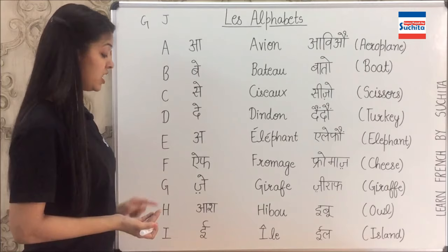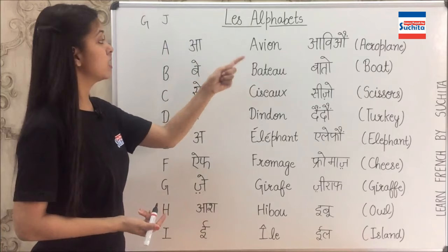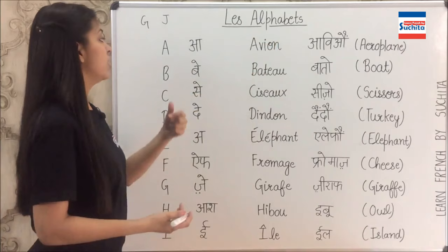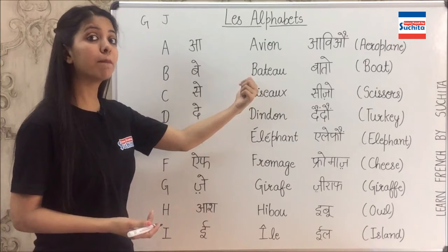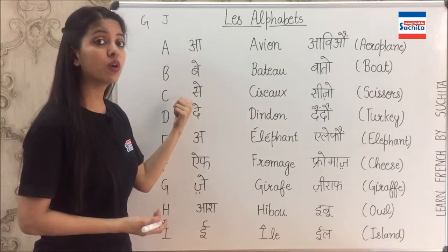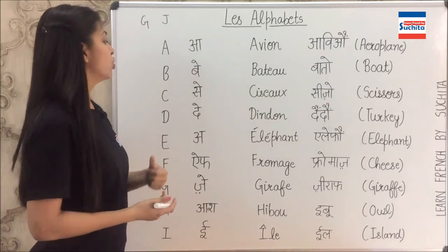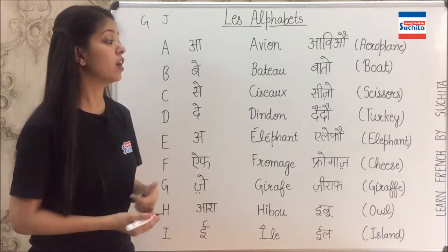We'll learn one word starting with every alphabet. A — avion, which means aeroplane. B — bateau, bateau means a boat. C — ciseau, it is C-Z-O, ciseau means scissors. D — dindon, dindon means turkey.